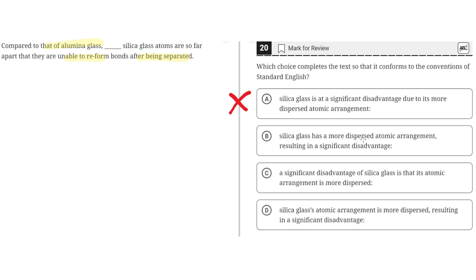B. Silica glass has a more dispersed atomic arrangement resulting in a significant disadvantage. This is incorrect for the same reason as A because it should be silica glass's atomic arrangement, not silica glass. So B is incorrect.